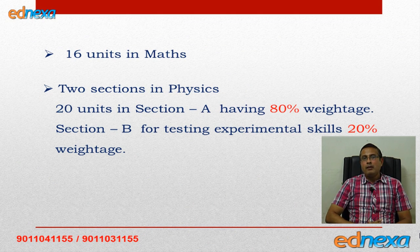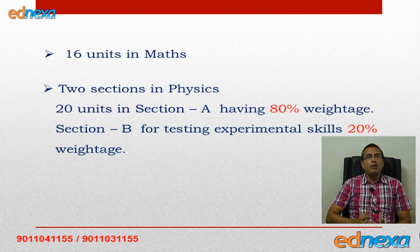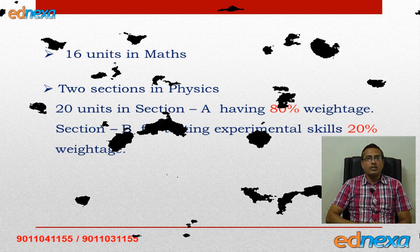In physics there are two sections. In section one there are 20 units and the weightage is 80%. In section B, practical component — that is experimental skills — will be taken into consideration, and for that the weightage is 20%. Note that the experiments you perform in 11th and 12th standard carry weightage for this 20% part.